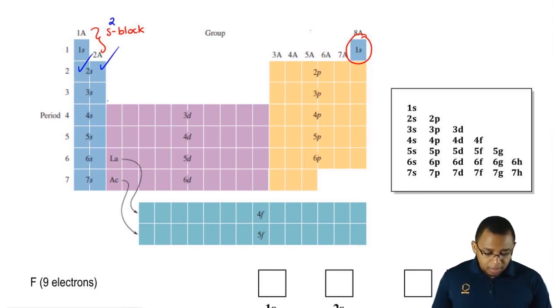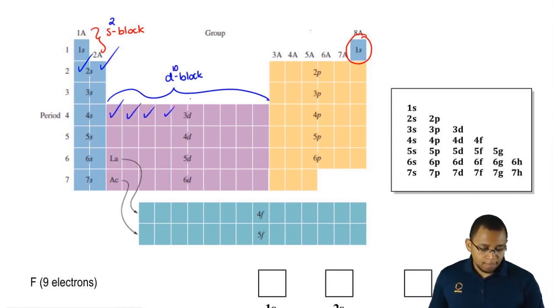Down here in the pit, we call this our D block. And remember, how many electrons can the D orbital hold? It can hold up to 10. And look, 1, 2, 3, 4, 5, 6, 7, 8, 9, 10.